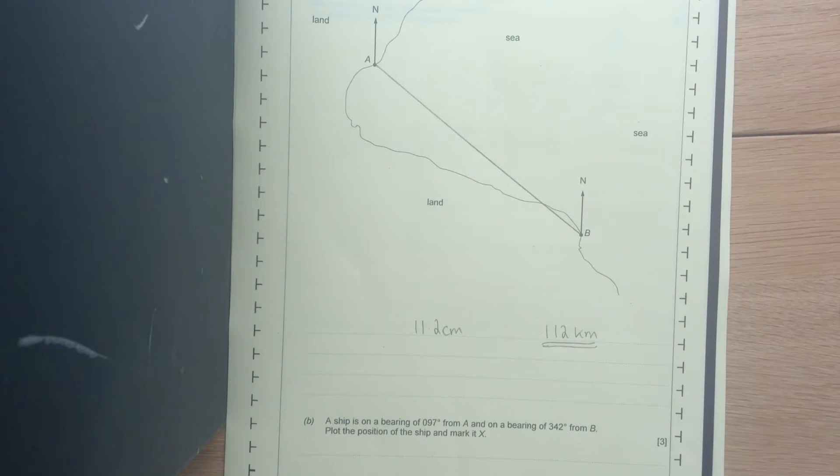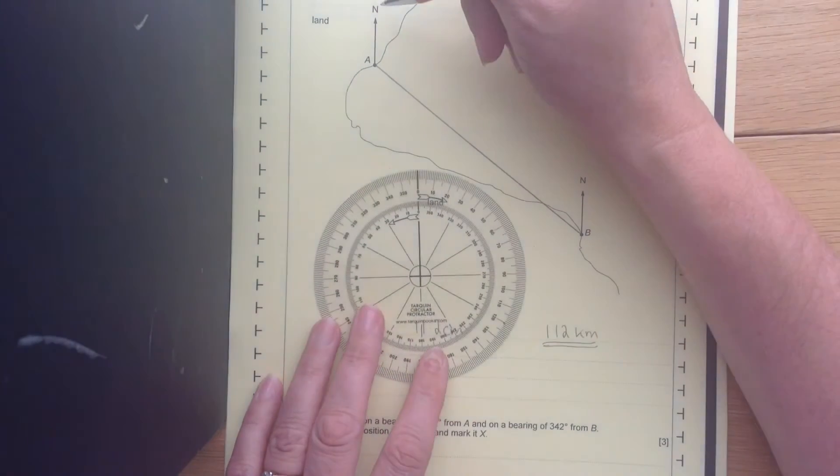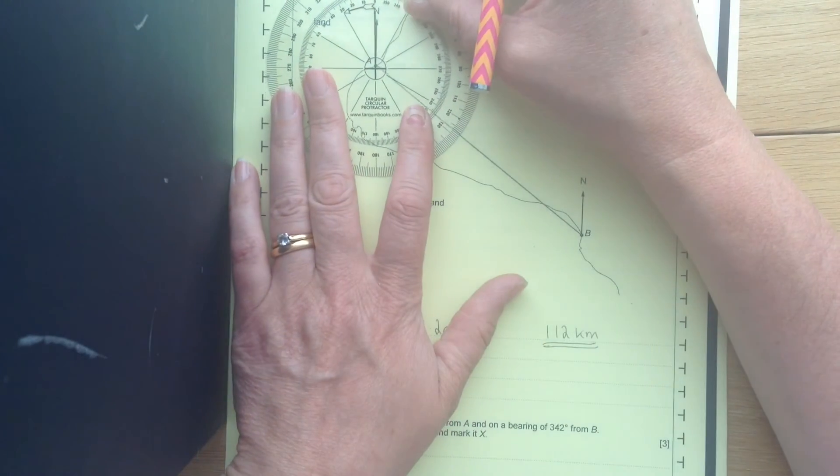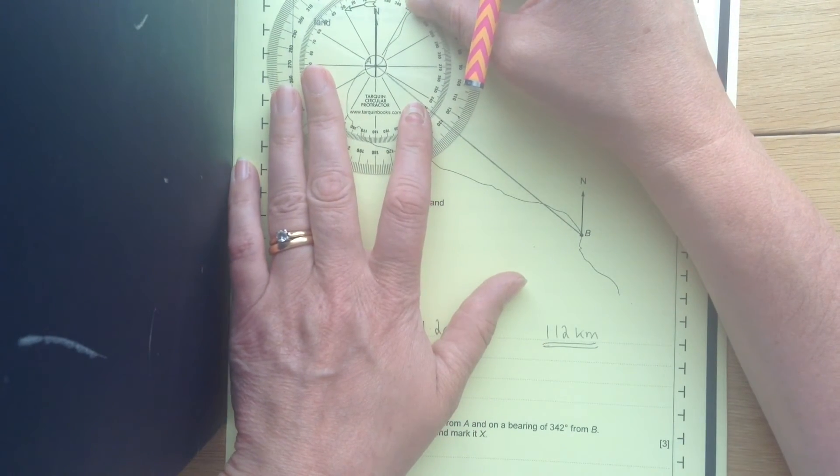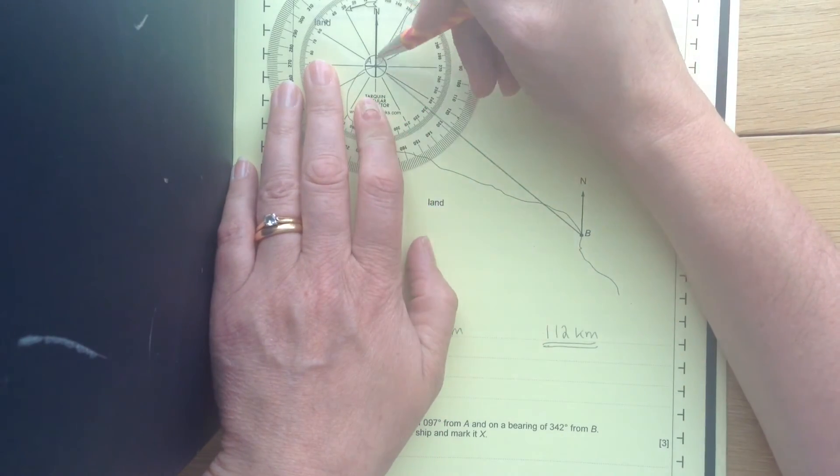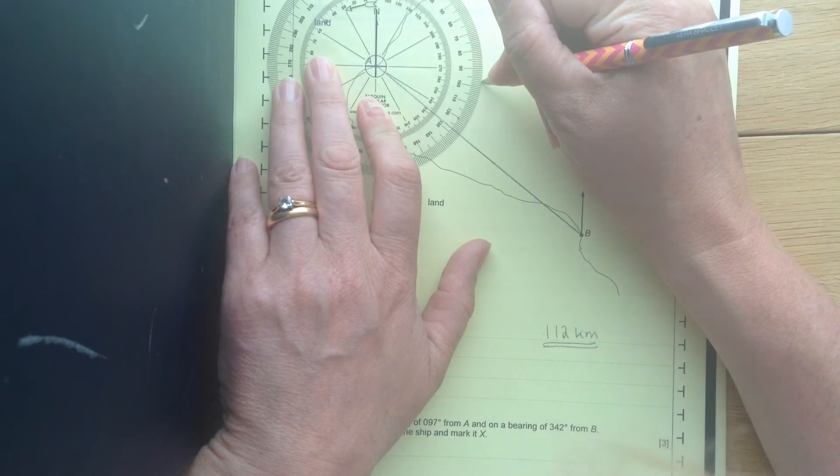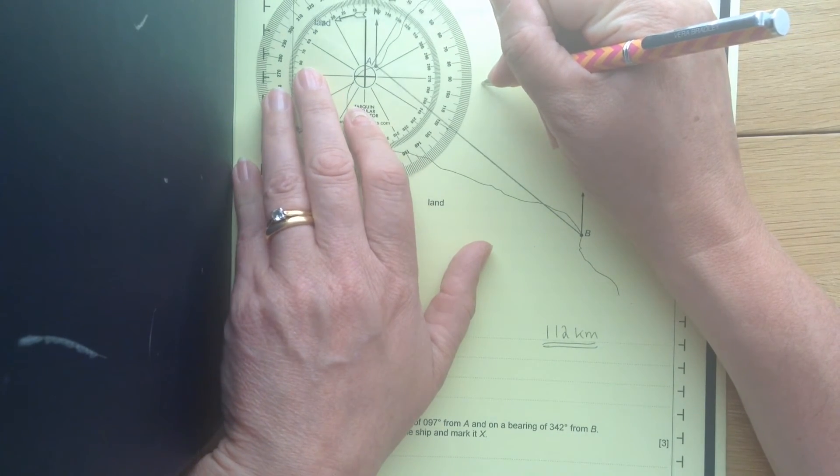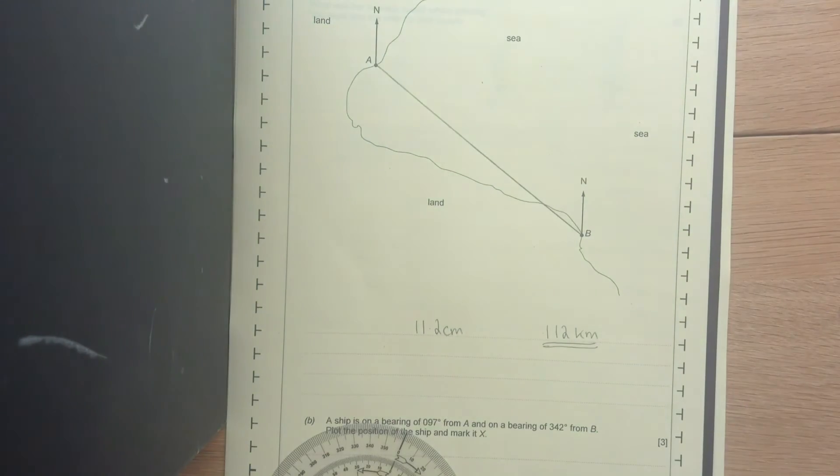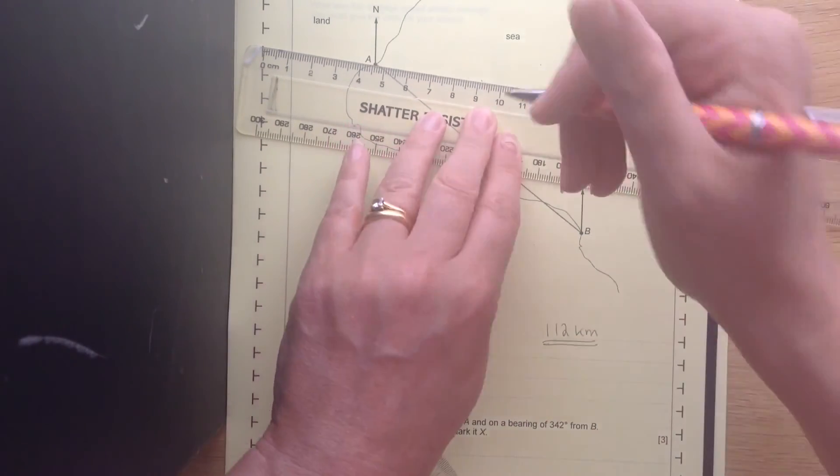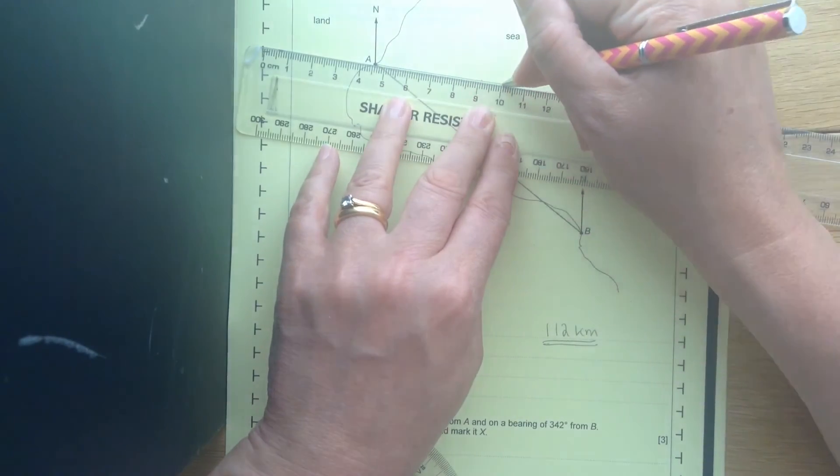So measuring our bearings then. We're on a bearing of 097 from A, measuring from the north line in a clockwise direction. Line our angle measure up as carefully as we can. Starting on 0, which is on the north line, going around to 97. Put a little dot. Draw the line on. We know that the ship is somewhere along this line.